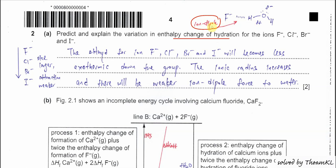These ion-dipole attractions are affected by the size of the halide ions. Going down the group, the ionic size gets larger. When the ion is larger, it has more electron shells and more shielding, so the attractions between these anions and the water molecules become weaker. This is the key concept you must understand before answering this question.